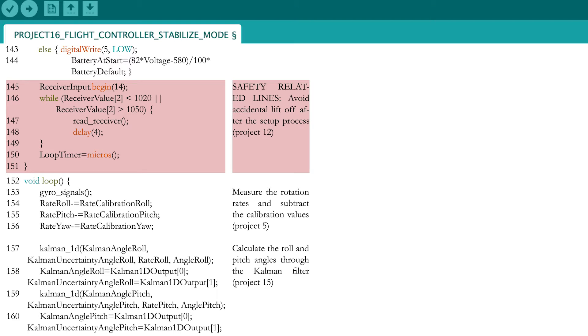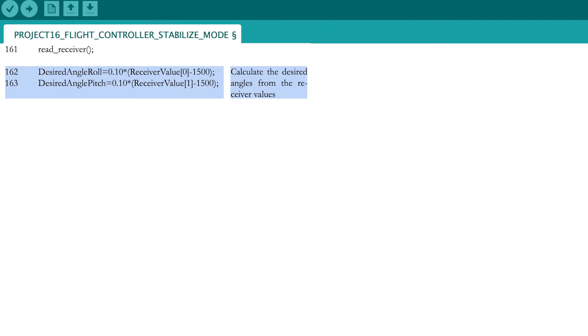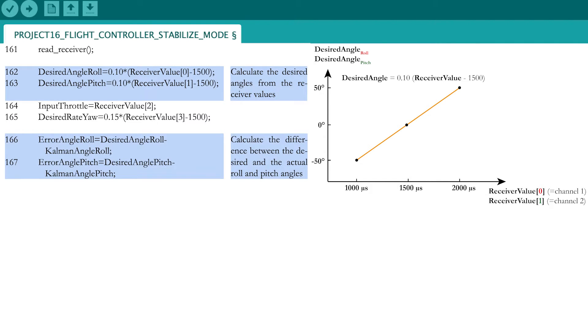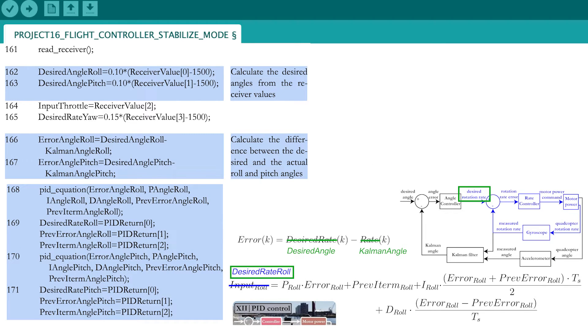Start the loop part and determine the angles using the Kalman filter. Calculate the desired angles as seen in this video and determine the error between these desired values and the actual roll and pitch angles. Now calculate the desired roll and pitch rotation rates through the outer loop angle PID controller.